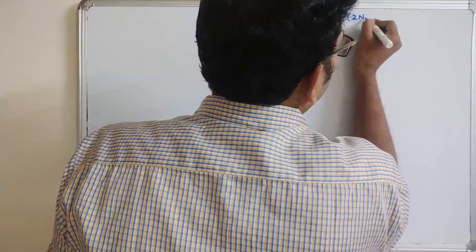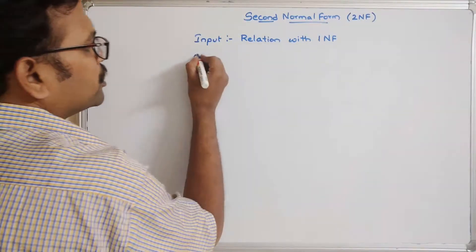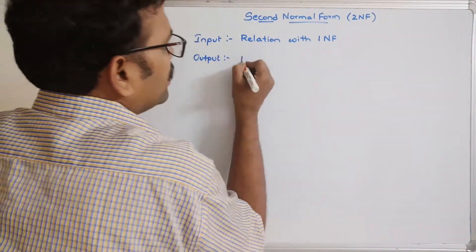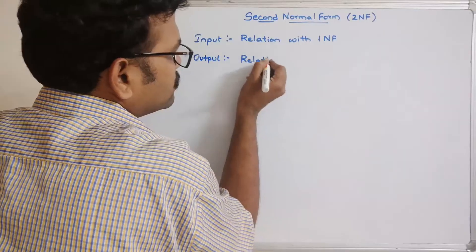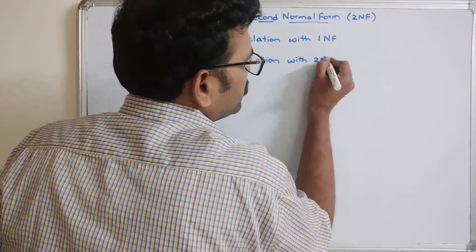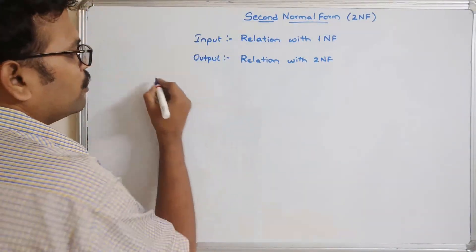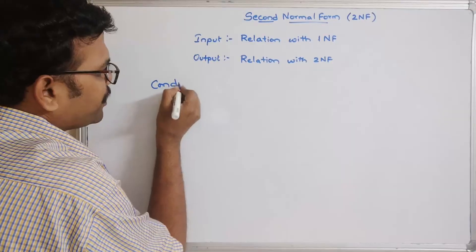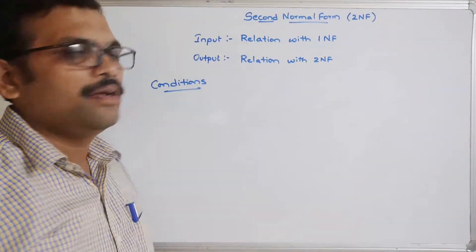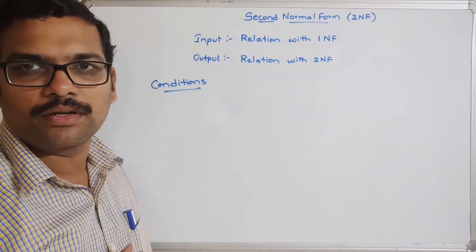The second normal form is also known as 2NF. The output for this is a relation with 2NF — a relation which satisfies the conditions of 2NF. Now we will see the conditions that need to be satisfied to determine whether a relation is in 2NF or not.